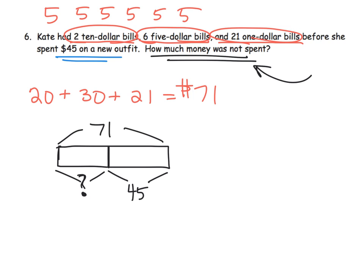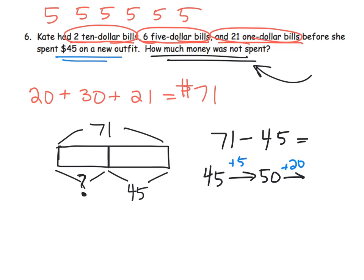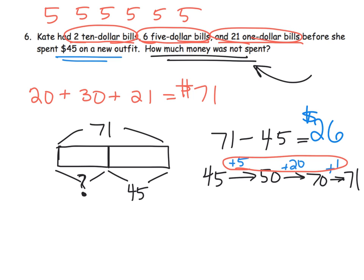For seventy-one minus forty-five, one way is the arrow method. Start at forty-five, add five to get fifty, then add twenty to get seventy, then add one to get seventy-one. How much did we add? Twenty plus five is twenty-five, plus one is twenty-six. So we would have twenty-six dollars left over.